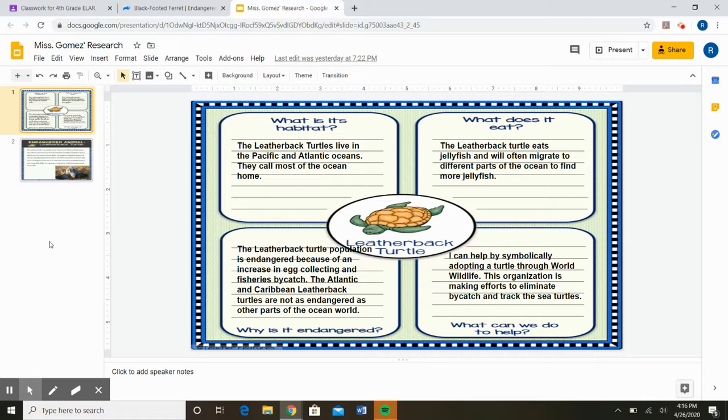You have four questions that you will be answering and you can find all the information in the article. Number one is, what is its habitat? Habitat is where it lives. Number two, what does it eat? Number three, why is it endangered? And number four, what can we do to help?